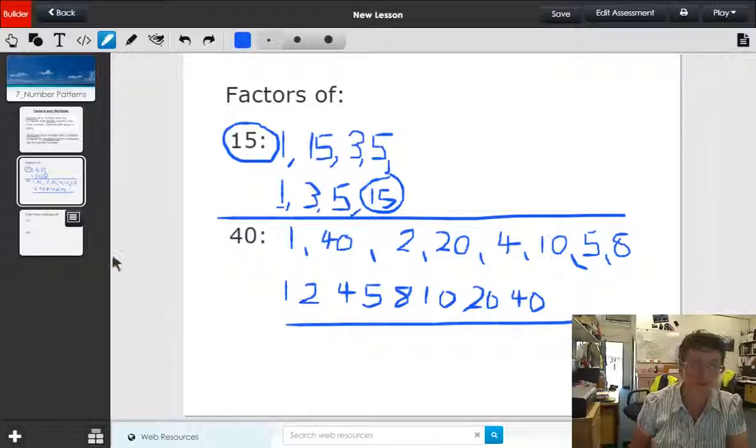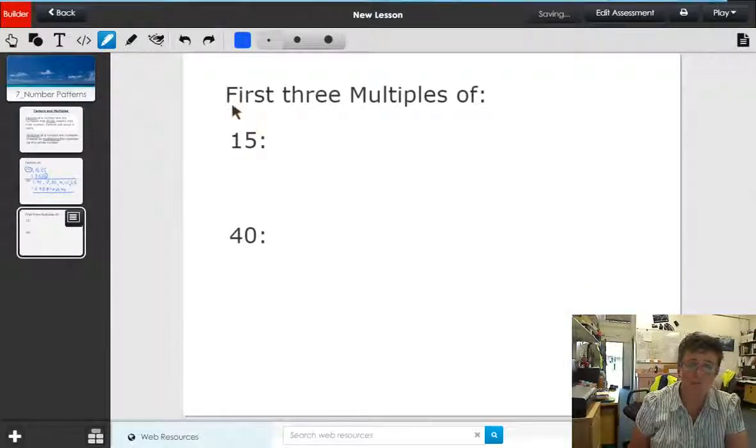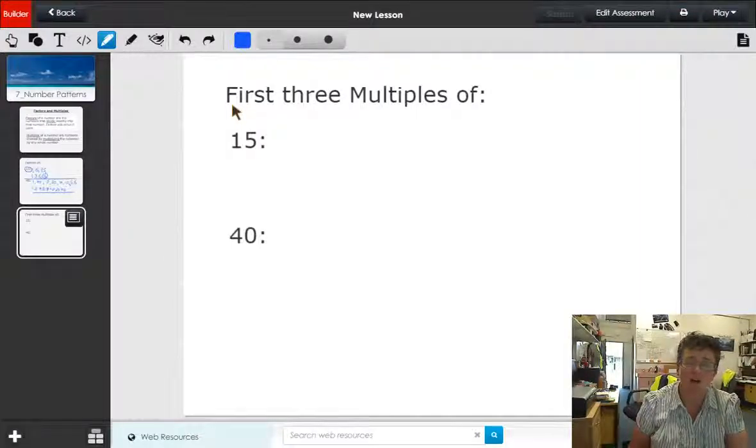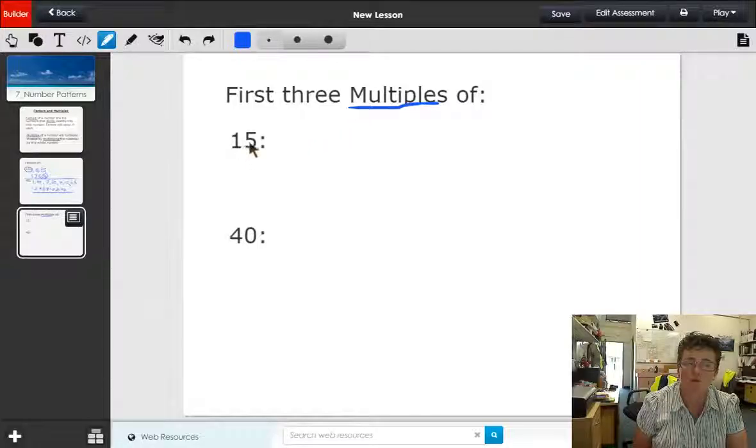Now let's look at multiples. When you see multiples, numbers have an infinite number of multiples, so usually when they ask you for multiples they will tell you how many multiples you want. So the first three multiples of 15: we start with 15 times 1 which is 15, the second multiple of 15 is 15 times 2 which is 30.